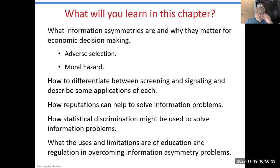This branch of economics has its origins in the insurance industry, where we began observing behavior that was not consistent with the classical rational economic agent. The best way to rationalize that behavior was through asymmetries in information, which lead to two kinds of departures from the rational economic agent — one happening before information is exchanged between two parties, and one happening after.